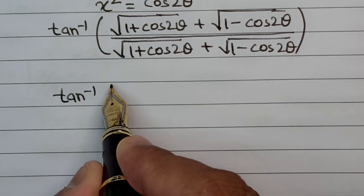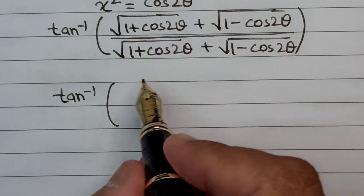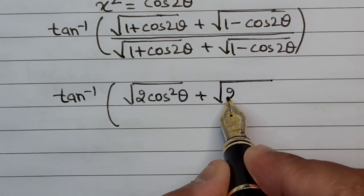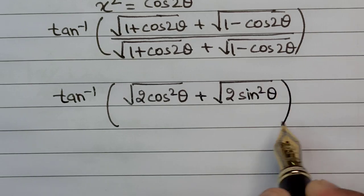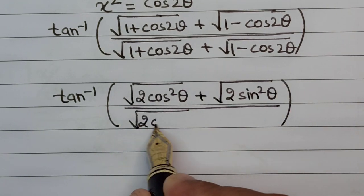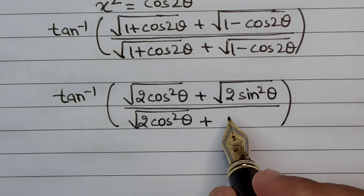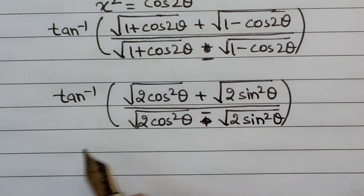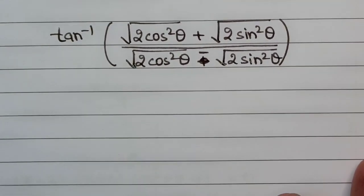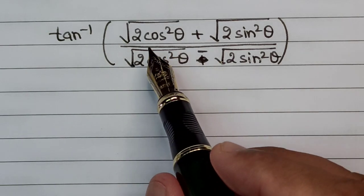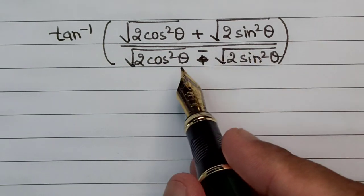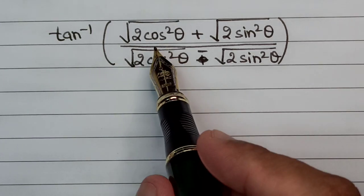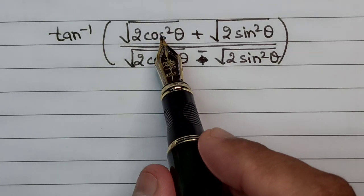The expression now becomes: tan inverse of (√(2cos²θ) + √(2sin²θ)) divided by (√(2cos²θ) − √(2sin²θ)). The √2 cancels from numerator and denominator, and the squares cancel the square roots.